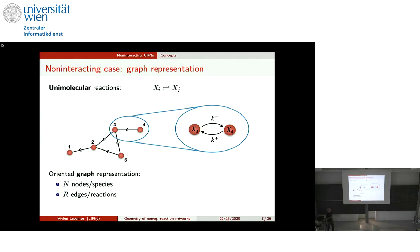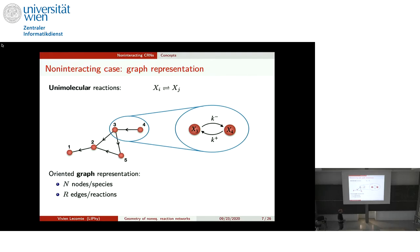The rates — for instance in a chemical reaction network — describe the probability per unit time of a transformation. To every reaction ρ (an edge) we associate rates k⁺_ρ and k⁻_ρ. These rates are not part of the graph structure itself; they describe the dynamics, while the graph only describes the network of interactions.